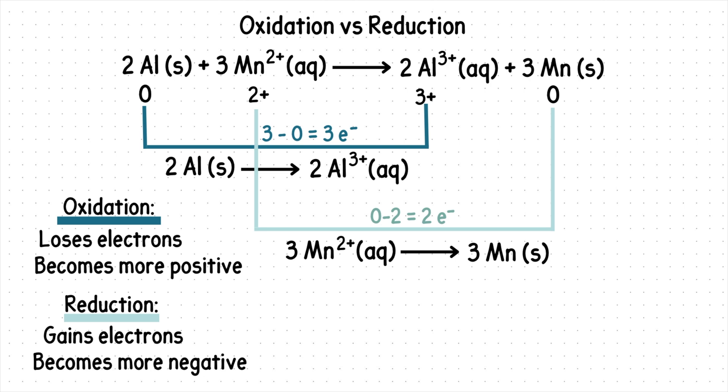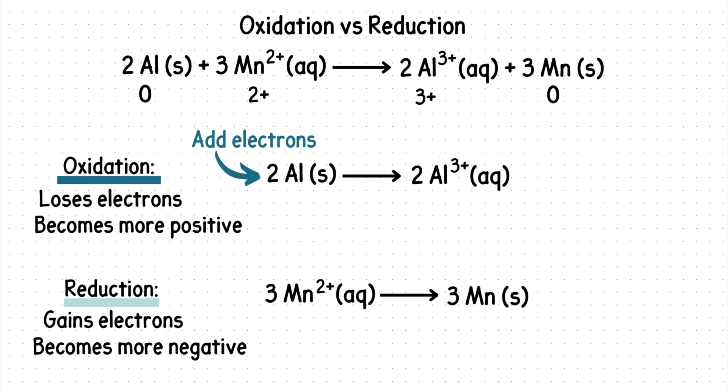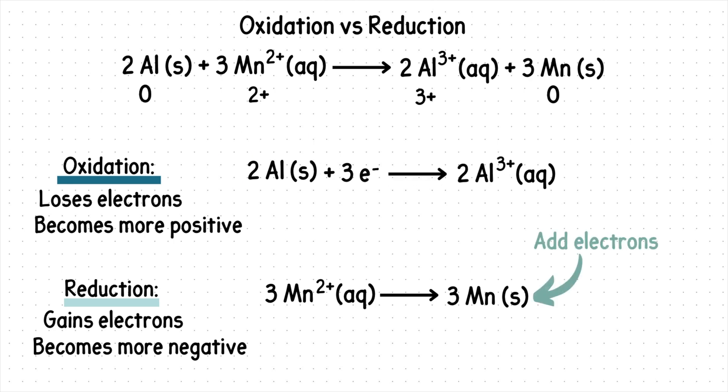For oxidation, we see there are 3 minus 0, so 3 electrons that were lost. And for reduction, there were 0 minus 2, so 2 electrons that were gained. Always add the electrons on the left side for oxidation and add the electrons on the right side for reduction. Notice we add electrons to the side that is in need of electrons, or the side opposite to the charge.